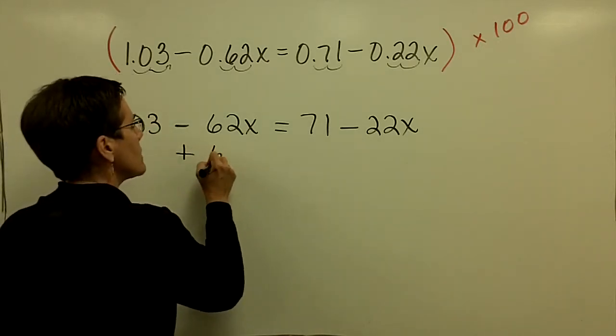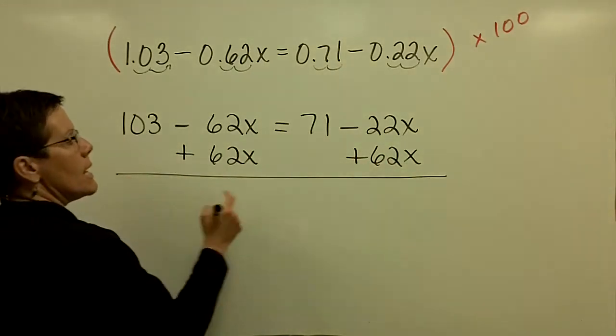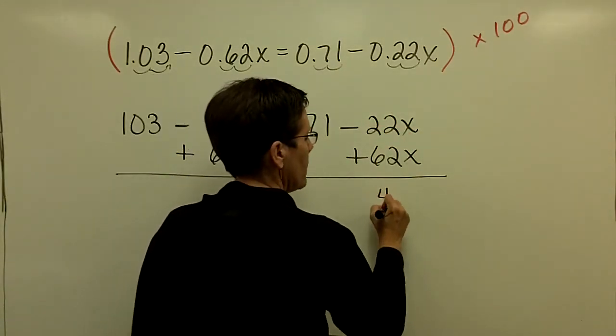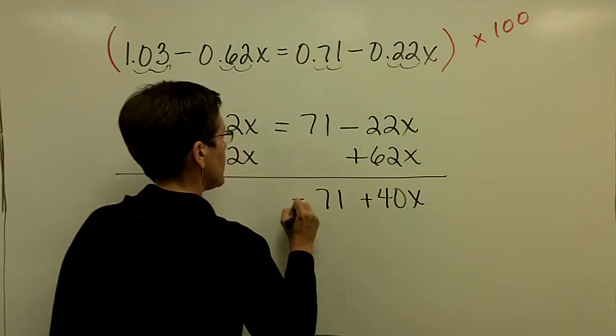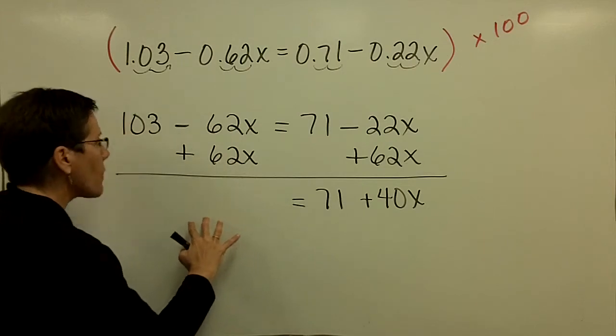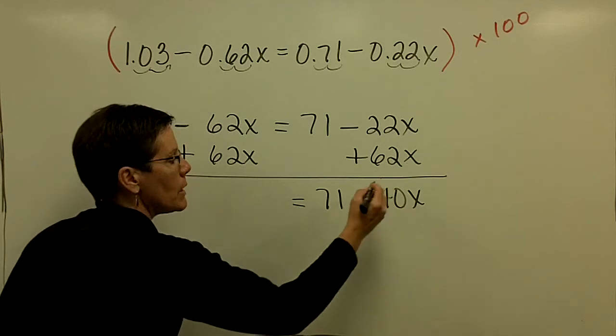I'm going to add 62x to both sides of this equation. And let me see, that would be equal to 40, a positive 40x. And I'll bring the 71 down, don't lose it. Those add to be nothing and bring your 103 down. I'm trying to isolate the variable x.